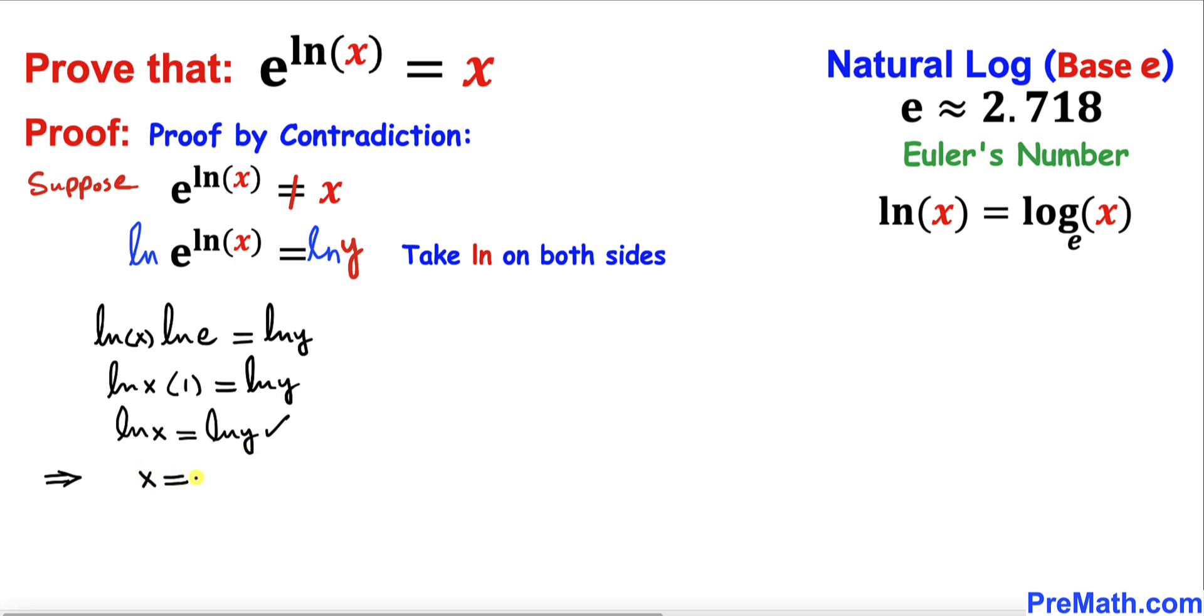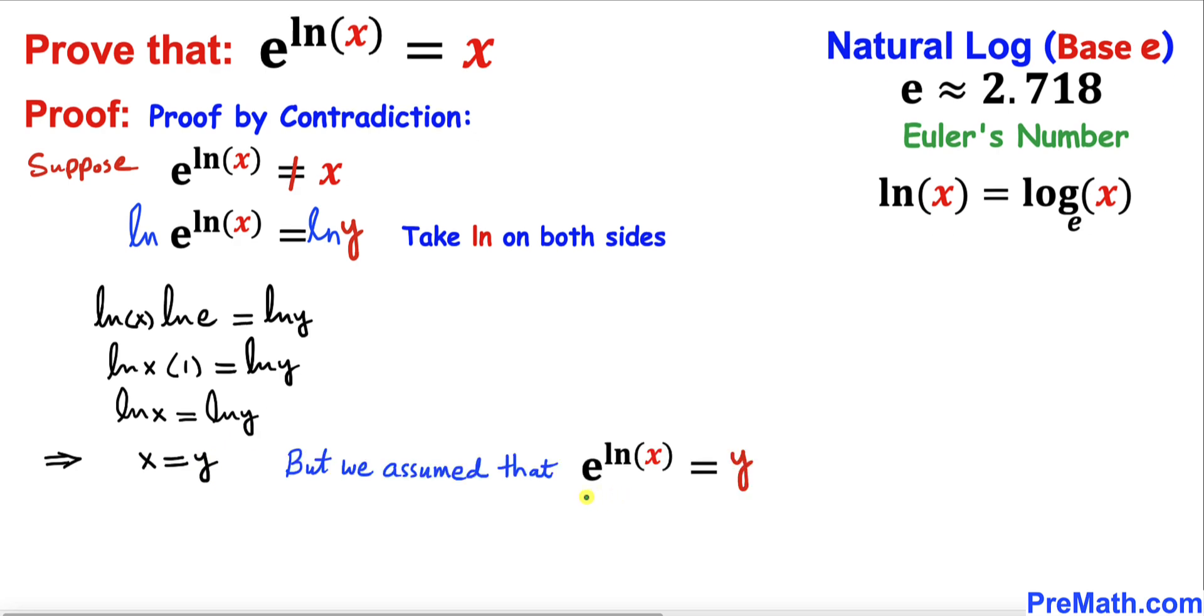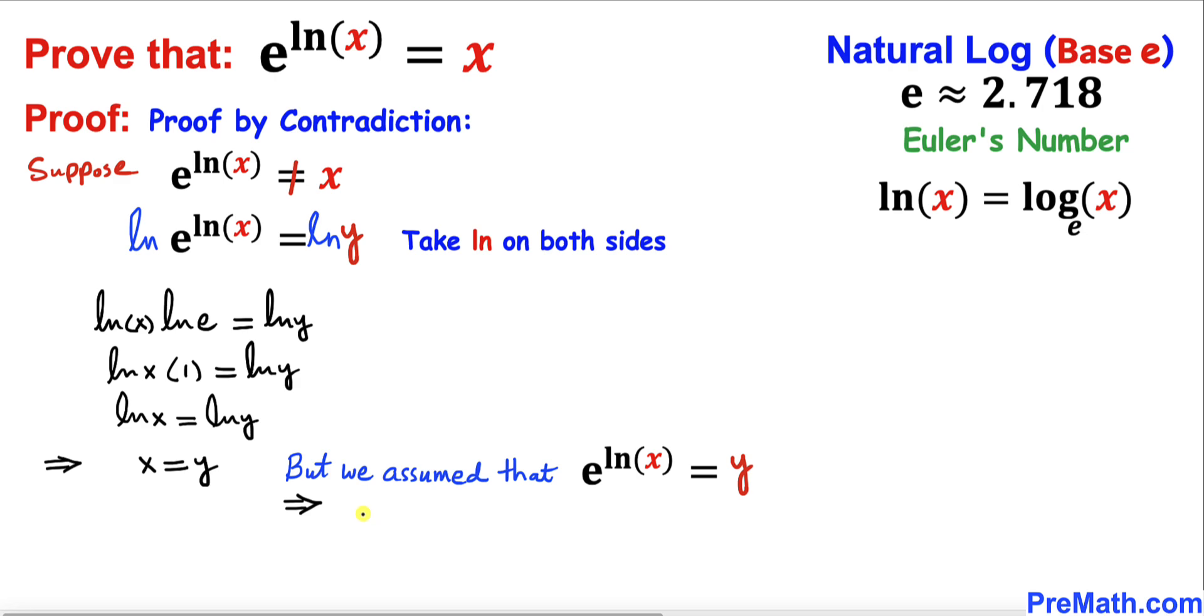But we assumed that e to the power of ln of x equals y, and y is equal to x. So therefore I'm going to replace this y by x. So therefore we conclude that the left-hand side e to the power of natural log of x is indeed equal to x.